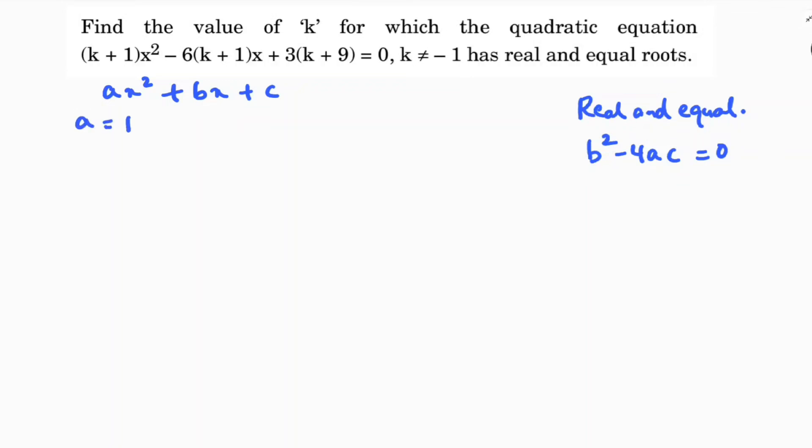Here, a = k+1, b = -6(k+1), and c = 3(k+9).